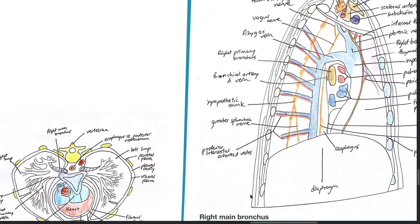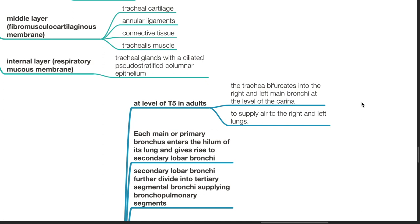Bronchi. At the level of T5 in adults, the trachea bifurcates into the right and left main bronchi at the level of the carina to supply air to the right and left lungs. Each main or primary bronchus enters the hilum of its lung and gives rise to secondary lobar bronchi. Secondary lobar bronchi further divide into tertiary segmental bronchi supplying bronchopulmonary segments.